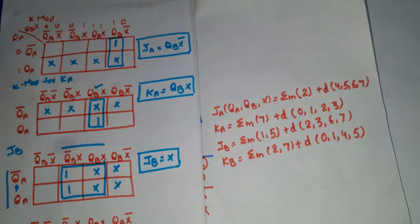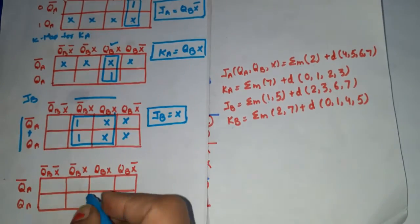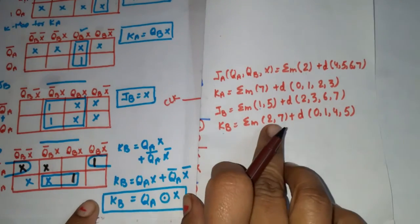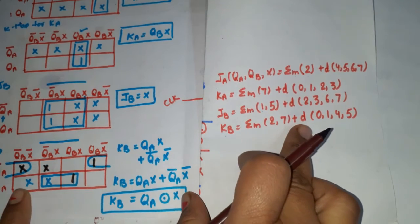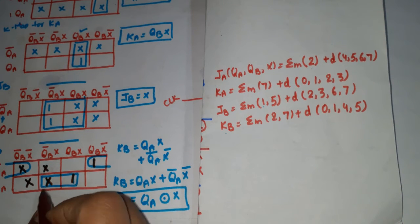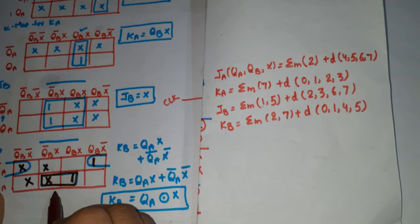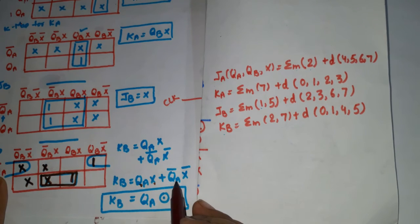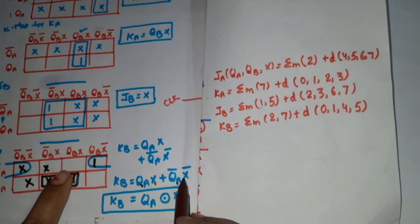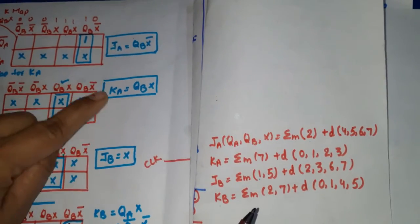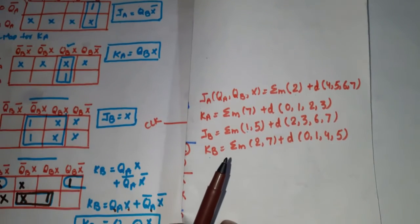For KB: minterms 2 and 7, don't cares at 0, 1, 4, 5. Two pairs are possible: one pair gives QA·X and the other gives QA-bar·X-bar. So KB = QA·X + QA-bar·X-bar, which can also be written as QA XNOR X. So we have 4 equations: JA = QB·X-bar, KA = QB·X, JB = X, KB = QA XNOR X.